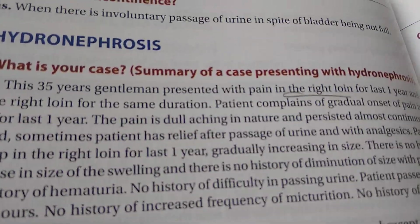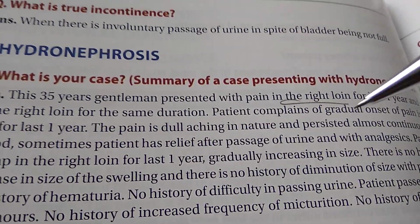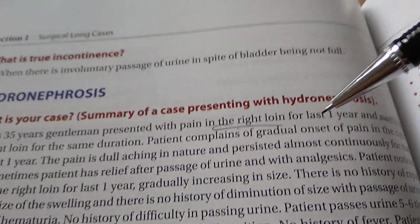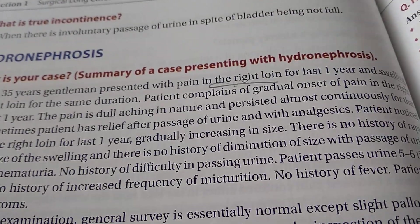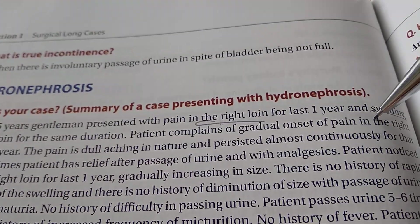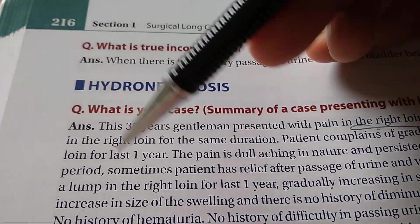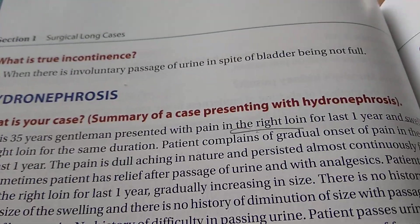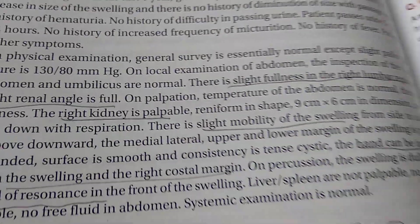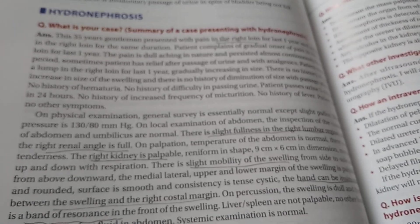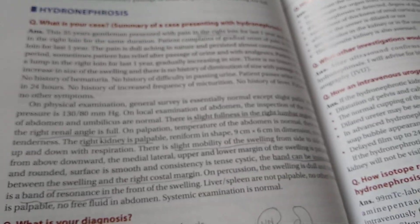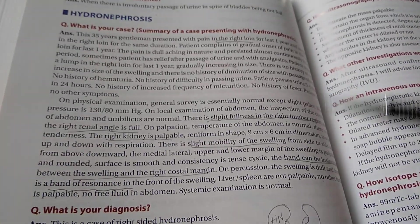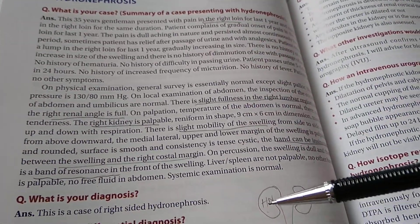So basically here is the case presentation for you. A 35-year-old gentleman has pain in the right loin and also has swelling in the right loin for the same duration — last one year. On examination everything else is negative. Just look at what this person is having. We have drawn here the right kidney hydronephrosis, which is the topic basis itself.